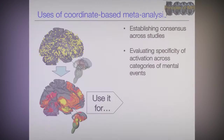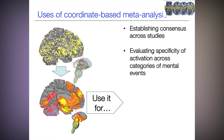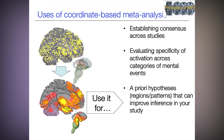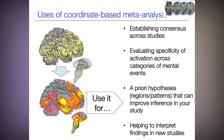We can use this for a number of things. One is to establish consensus across studies. We can evaluate the specificity of activation across categories of mental events or types of studies. We can come up with a priori hypotheses — regions or patterns that can improve inferences in your study. And finally, we can use this as a guide to interpret findings in new studies and make better inferences about what brain maps mean.